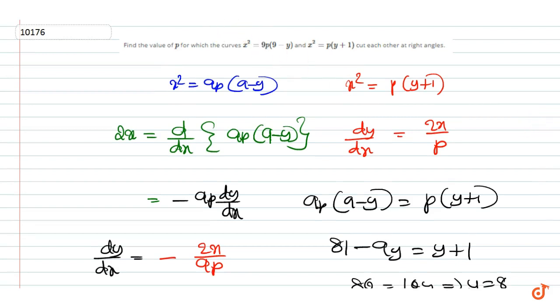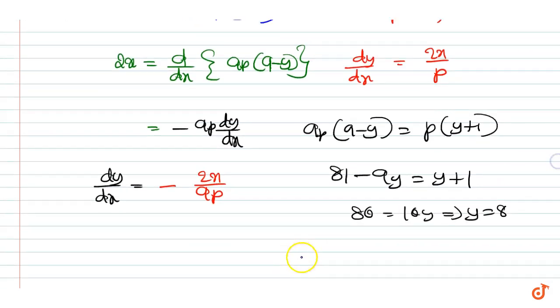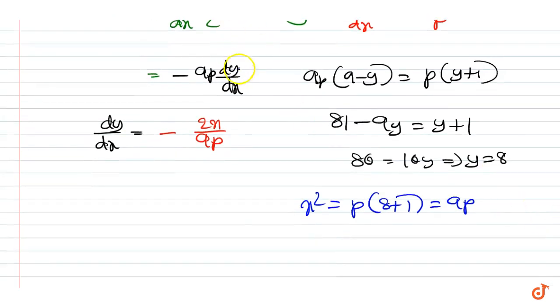Since y = 8, we have x² = p(8+1) = 9p. Therefore, the point of intersection of the curves are (±3√p, 8).